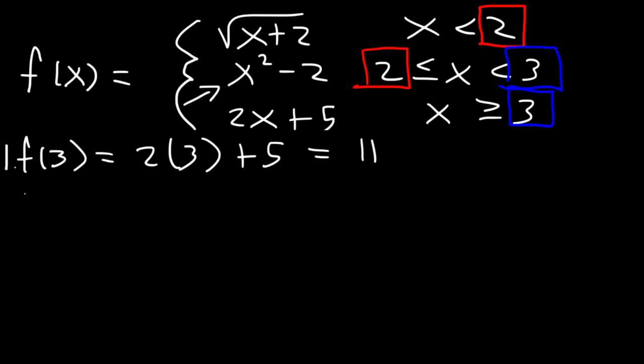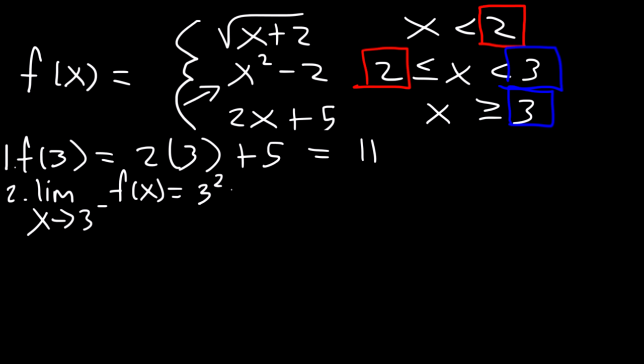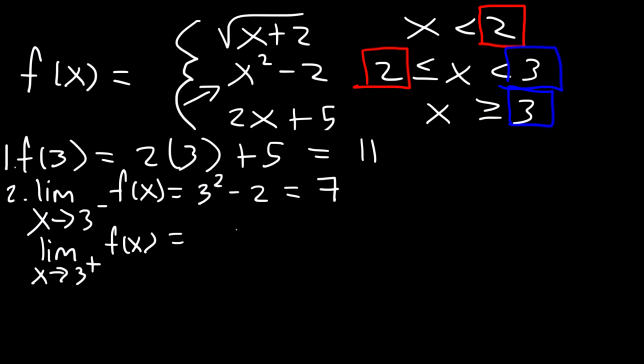Step 2: find the limit as x approaches 3 from the left side. Approaching from the left means x is less than 3, so we use x squared minus 2. That's 3 squared minus 2 — 9 minus 2 is 7. Now find the limit as x approaches 3 from the right. We use 2x plus 5: 2 times 3 plus 5 is 6 plus 5, which equals 11.